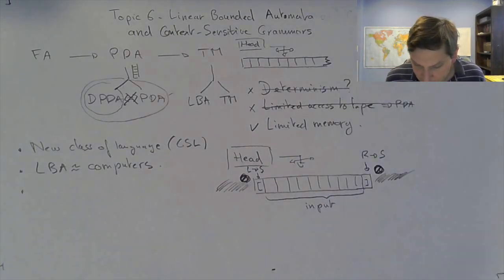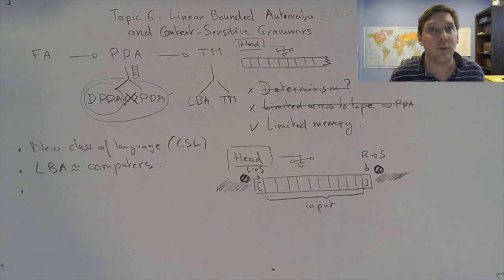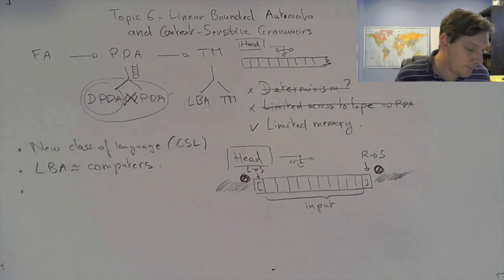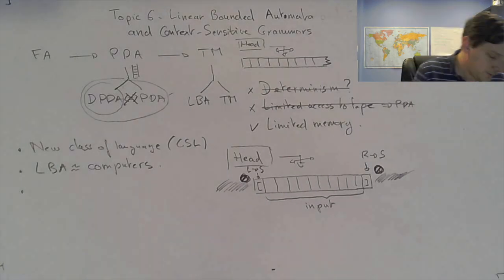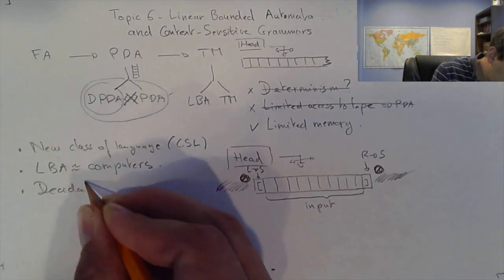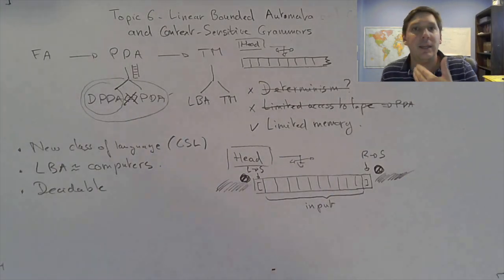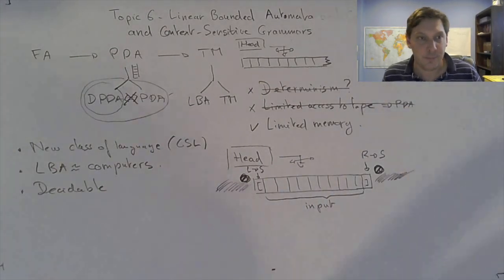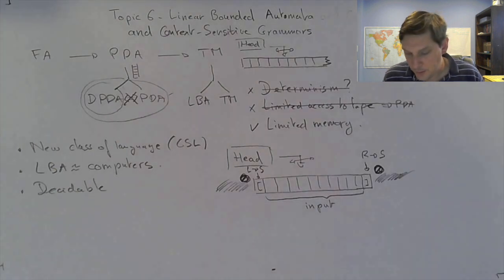Another interesting fact is that LBAs — the class of language recognized by LBA — belongs to the class of decidable languages. We'll talk more about decidability a little bit later; it's its own chapter and an important piece of this course.